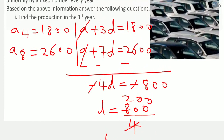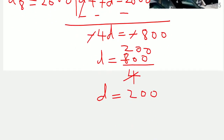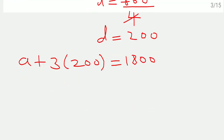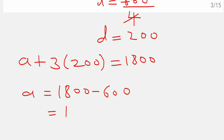Now to find the value of a, the production in the first year, I substitute d into equation 1: a plus 3d equals 1800, so a plus 3 times 200 equals 1800. Therefore a equals 1800 minus 600, which gives a equals 1200. The production of cars in the first year is 1200.